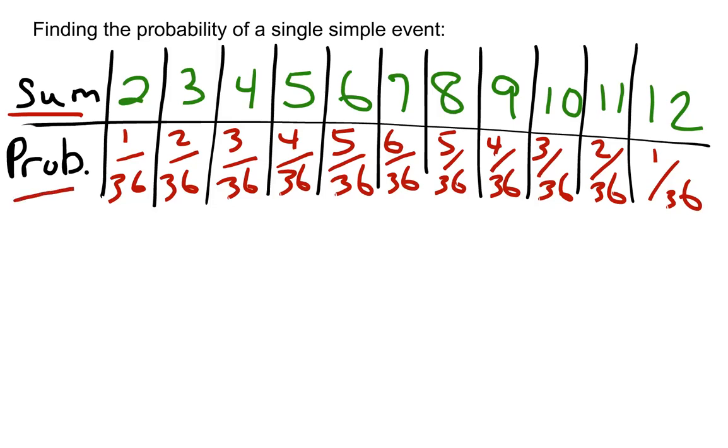Below, for our probabilities, we have the probability or likelihood of each outcome occurring. So in other words, if you roll two dice, the probability that you roll a sum of 2 is 1 in 36. The probability that you roll a sum of 3 is 2 in 36, and so on.